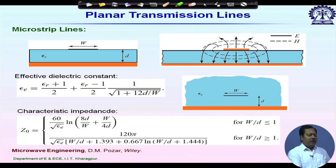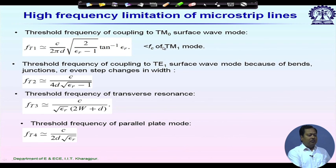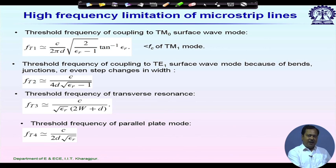The TM0 mode has no cutoff frequency, so we cannot avoid its excitation entirely — it depends on substrate thickness, with thicker substrates producing more TM0 excitation. However, we can avoid higher-order modes such as TM1, which has a cutoff frequency. The first limitation comes from the cutoff frequency of the TM1 mode: ft1 ≈ c / (2πd√εr), where c is the speed of light in free space, d is the substrate thickness, and εr is the dielectric constant.